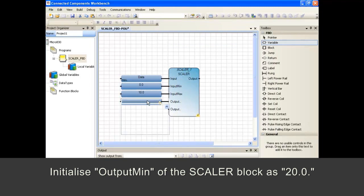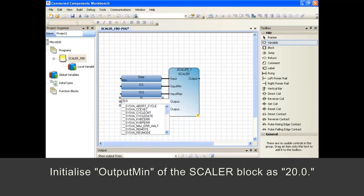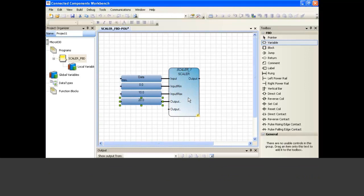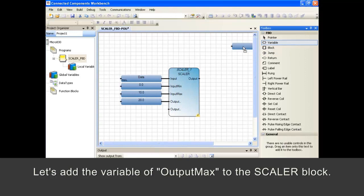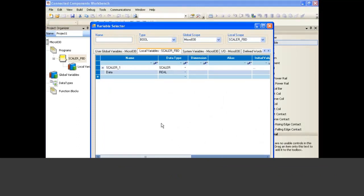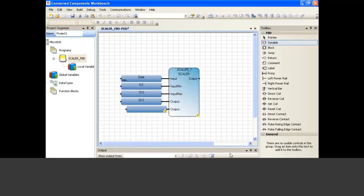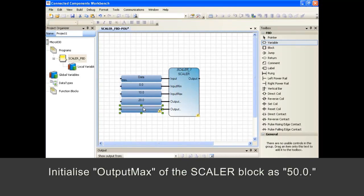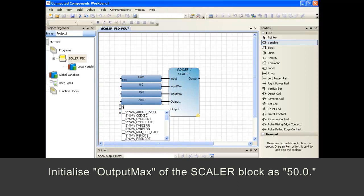Initialize inputMin of the scalar block as 20.0. Now, let's add the variable of outputMax to the scalar block. Initialize outputMax of the scalar block as 50.0.